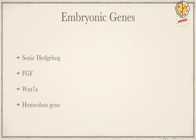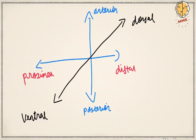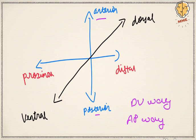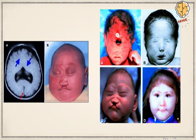All these genes have a particular task to pattern the body in a specific way. Development occurs in three directions: anterior-posterior (AP), dorsal-ventral (DV), and proximal-distal (PD). These are the three axes along which our body needs to be patterned for proper growth. The first gene we'll discuss is sonic hedgehog.